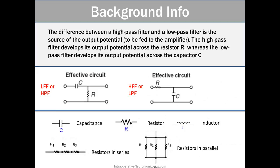Background information. The difference between a high-pass filter and a low-pass filter is the source of the output potential to be fed to the amplifier. The high-pass filter develops its output potential across resistor R, whereas the low-pass filter develops its output potential across the capacitor C. So if we look at the effective circuit on the left side, we have a low frequency filter or a high-pass filter. On the right side, that's using the capacitance through the resistor, and the resistor through the capacitance is the high-frequency filter or low-pass filter.